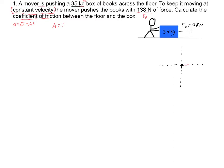First step on any Newton's law problem: draw a free body diagram. Don't overthink it — just put down all the forces that you have. I have a force of push, 138 newtons, because the mover is pushing it. I also have some friction here; friction goes opposite the direction of motion, so it goes back to the left. I'm going to try to draw that the same length as the force of push because we're going at constant velocity, so I already know they have to be equal. The box is on Earth so I have gravity going down, and it's on a surface so I have normal going up. Normal and gravity should also balance out.